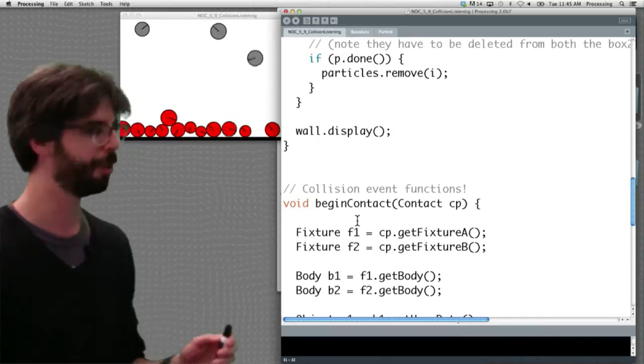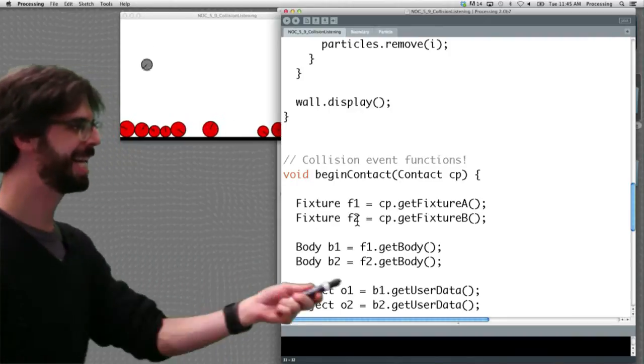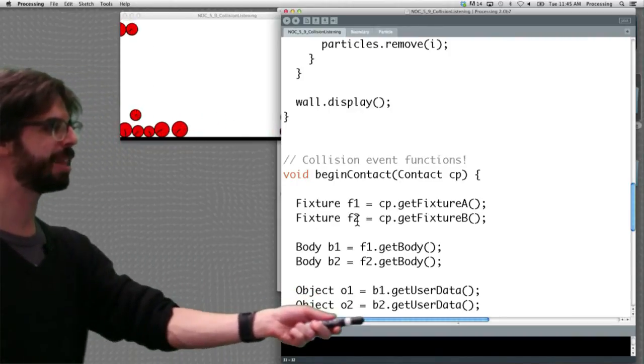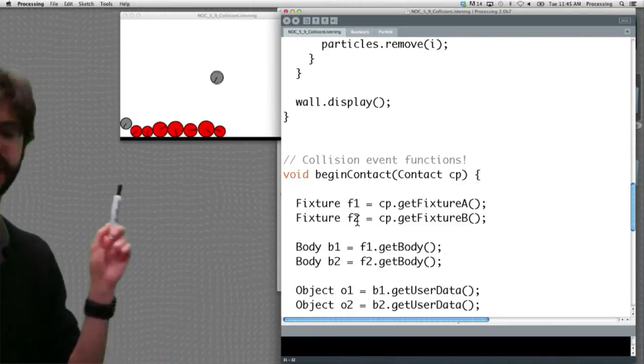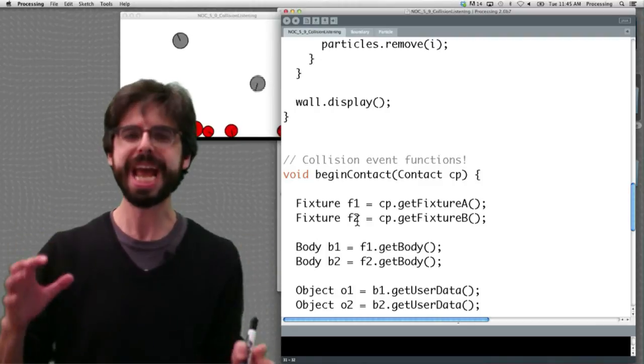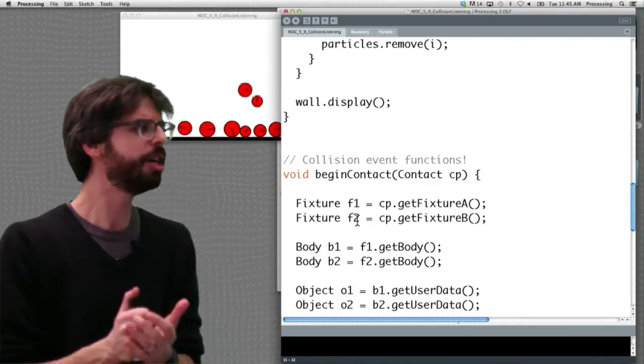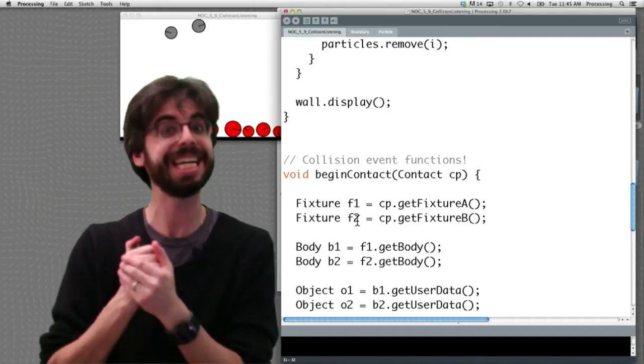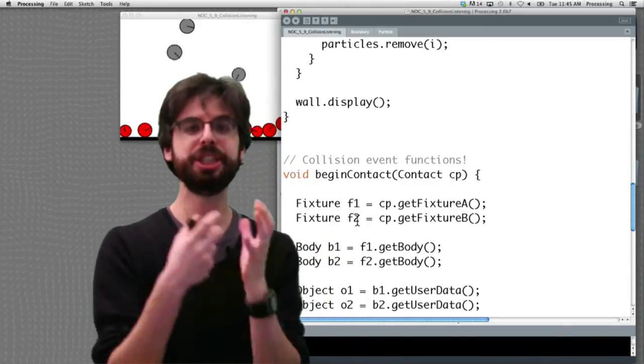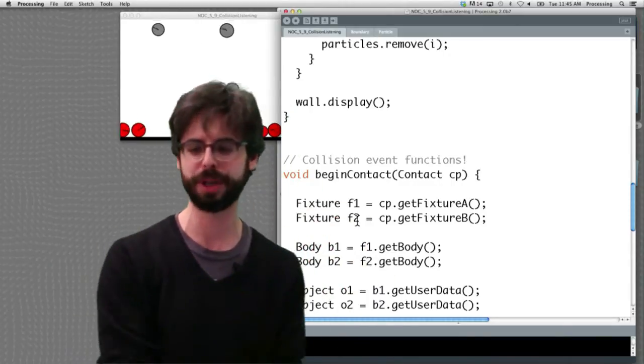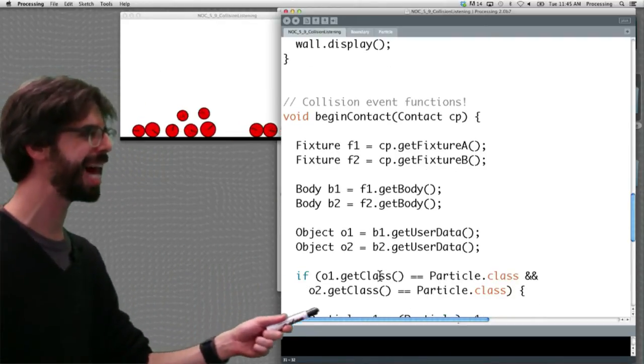Step two, which bodies are attached to those fixtures? And now, step three, get the body's user data. But look at this. The body's user data is a generic object. It's a generic object. We actually now have to determine, hmm, what kind of object are you? So the body, the user data is not going to keep track of what type of data was set for its user data, just that an object was put in there. So it's up to us to say, hey, if the object class is a particle, if both objects are particles.